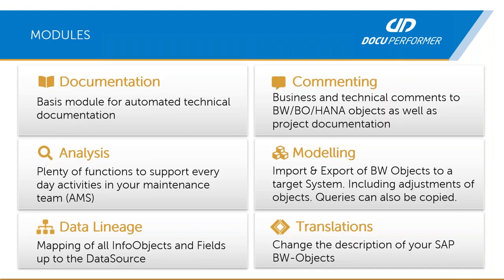Let's cover the modules. Each of the objects we saw can be treated with different functionalities. The main functionalities are documentation and commenting. The main idea is that you can automatically generate documents and documentation from the technical information within the system — so you no longer have to manually describe how a cube is composed, how transformations look, what process chains contain, and so on.